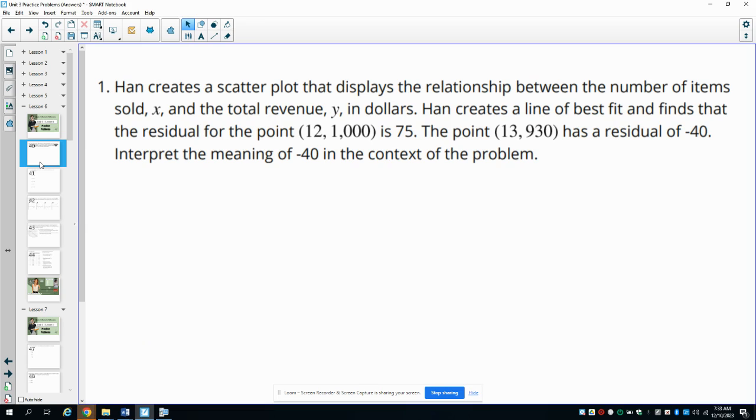Number one says that Han creates a scatterplot that displays the relationship between the number of items sold, X, and the revenue, Y, in dollars. Han creates a line of best fit and finds the residual for the point 13,930 is negative 40. Interpret the meaning of negative 40 in this context. So we don't care about this point. We're only looking at this one.